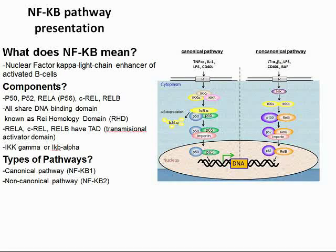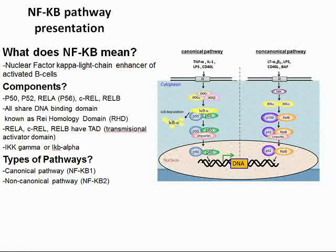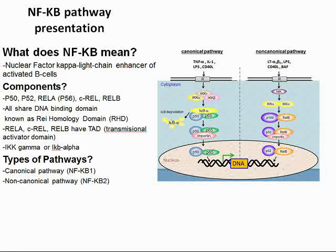First off, what does NFKB mean? NFKB stands for the nuclear factor kappa-like chain enhancer of activated B cells. In short, this is the pathway to activate the immune response within B and T cells. It also plays a role in effector enzyme response, as well as regulating the inhibitors in apoptosis.